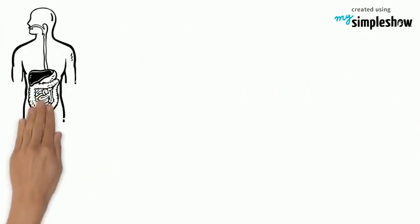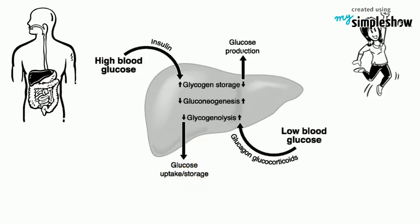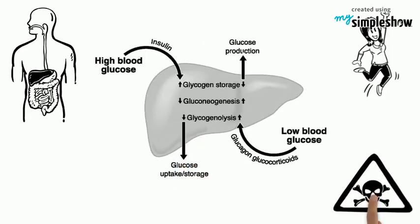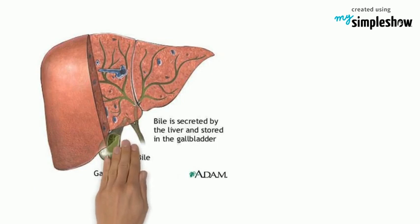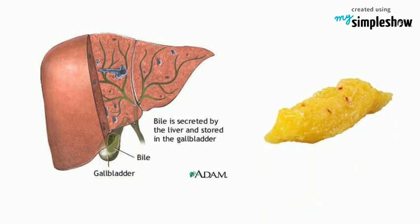The liver plays a key role in maintaining adequate glucose levels and carrying nutrients and toxins to be filtered, such as urea. The liver also secretes bile, which is used to solubilize fat for absorption and utilization.